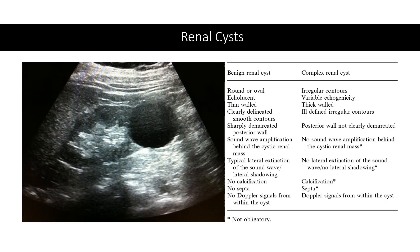Renal cysts are frequently encountered during renal ultrasound. Some references report that the prevalence of renal cysts is as high as 50% in the general population, with frequency increasing with patient age. Cysts are classically visualized as well-defined, circular, thin-walled structures filled with anechoic fluid and good transmission of sound.